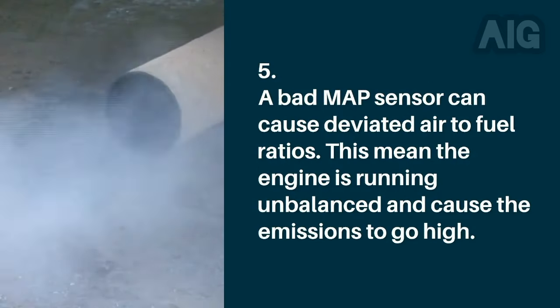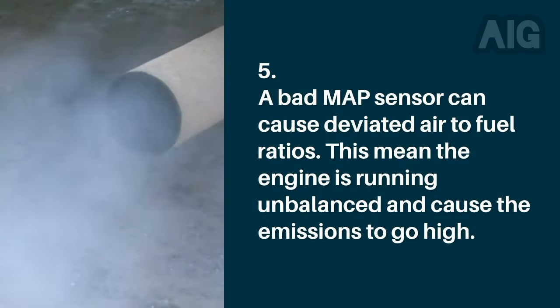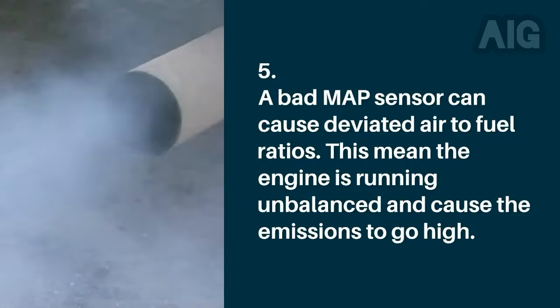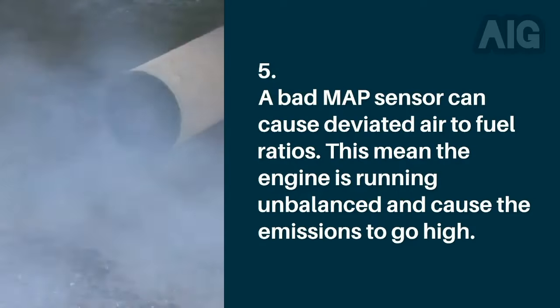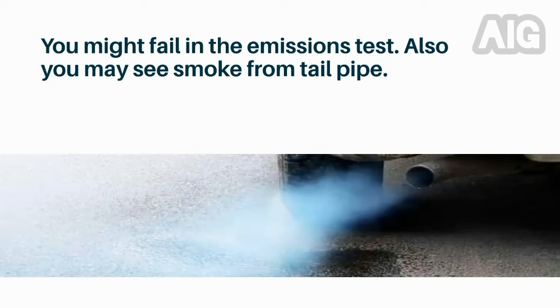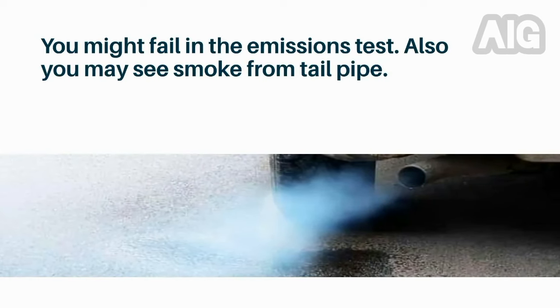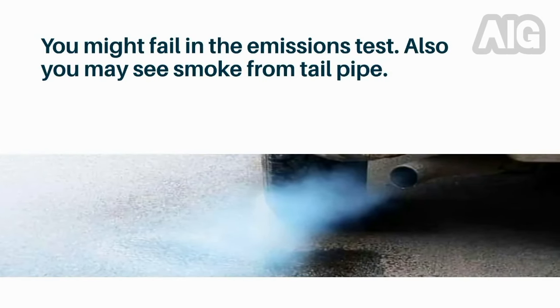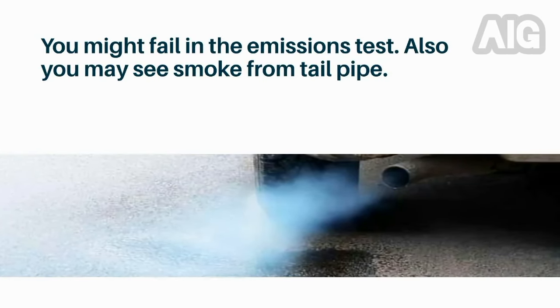Symptom 5: A bad MAP sensor can cause deviated air-to-fuel ratios. This means the engine is running unbalanced and causes emissions to go high. You might fail an emissions test, and you may also see smoke from the tailpipe.